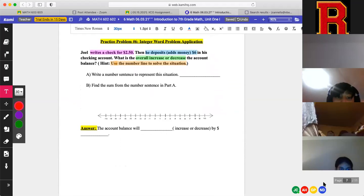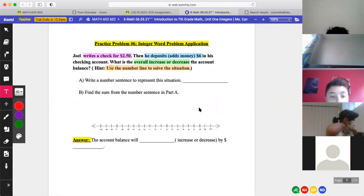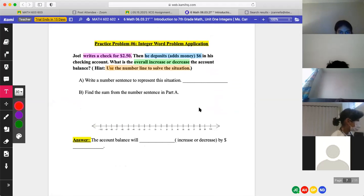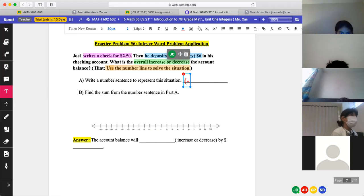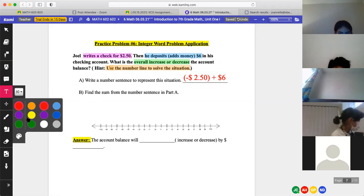So, problem number six. Let's have – who's in here? Yerlin. Actually, David, loud and proud. Read number six. Yes. Okay. Joel writes a check for $2.50. Then he deposits ads, which means adds money, $6 in his checking account. What is the overall increase or decrease the account balance? So, what we're supposed to do is that we need to, like – so, if we're running a check, that means that we're taking money, like, giving money away, which means that we're losing money. So, I would say that we would have to subtract the $6.00 to $0.50. Good.